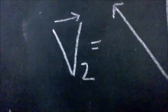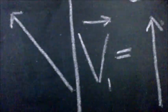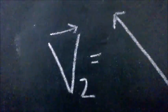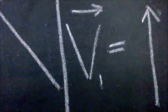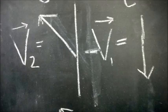We can show the vectors as their respective arrows. This is v2 and plus v1. To show minus v1, we change the direction of the arrow.